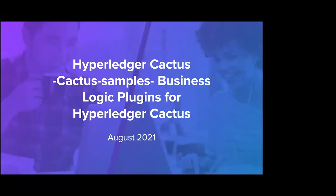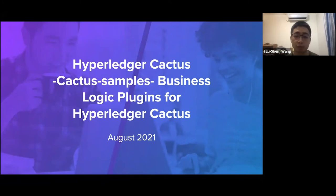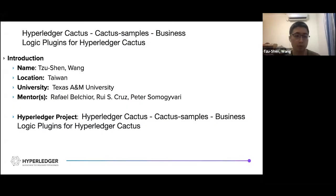My project is about building a Cactus plugin using a business logic plugin for Hyperledger Cactus. My name is Jason, currently enrolled at Texas A&M University. My mentors are Professor Rafael Lu and Peter.